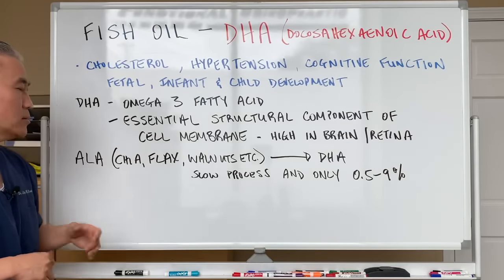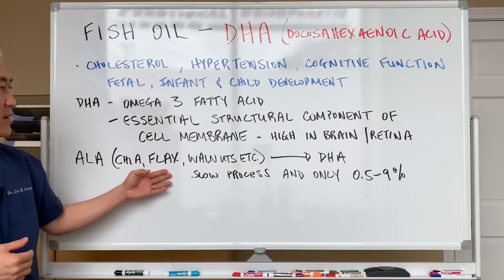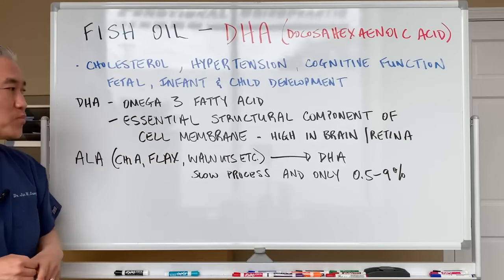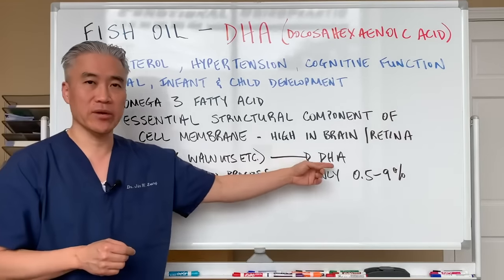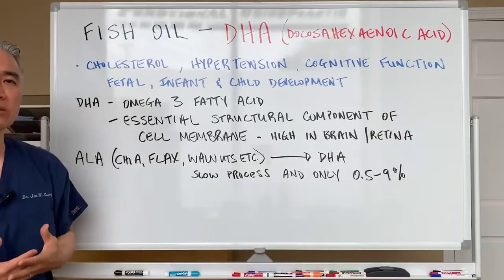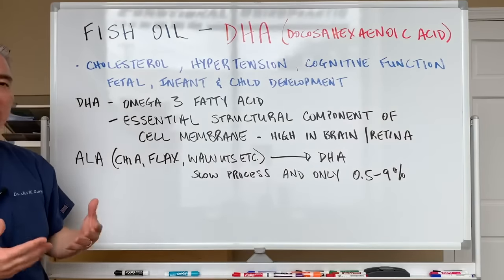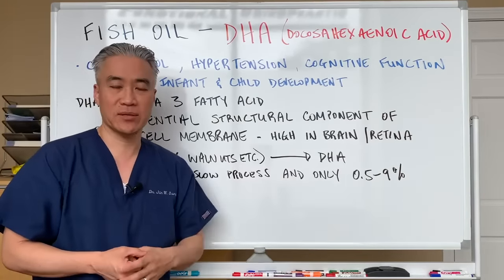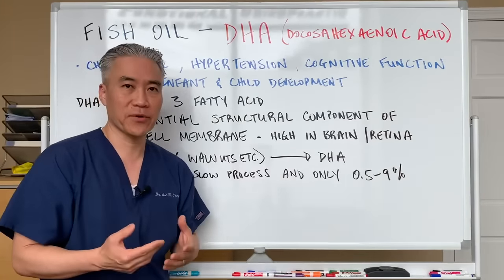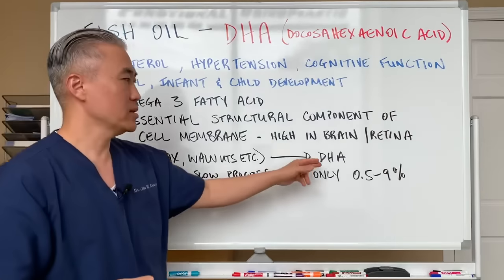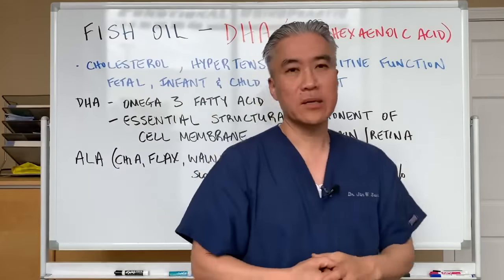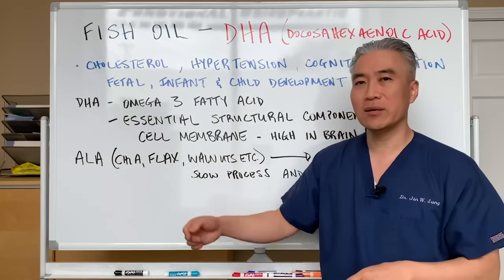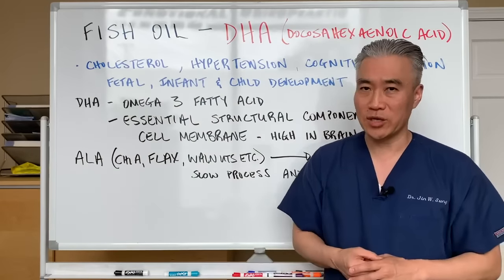ALA, found in chia seeds, flaxseed, walnuts, and similar foods, can convert to DHA. However, the process is slow, it's multi-step, and only about 0.5 to 9 percent will convert from ALA to DHA. So oftentimes a diet is deficient in both ALA and DHA.